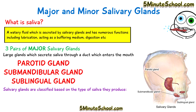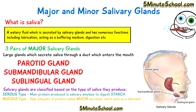We can classify these salivary glands based on the type of saliva they produce. Serous salivary glands secrete saliva rich in the enzyme salivary amylase, which is involved in the digestion of starches. Mucus-based glands secrete saliva rich in the protein mucin, which acts as a lubricant. The third type is seromucus, whereby both mucin and amylase are produced.